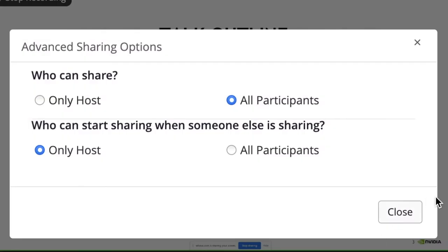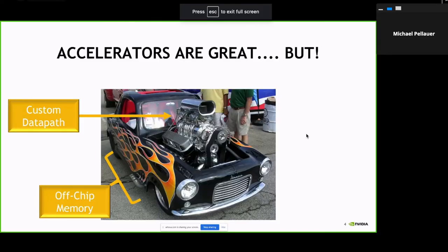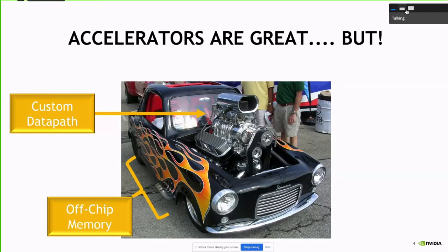I'm going to start by breaking everything Tashar talked about at a very high level down to the nitty-gritty details so we can really dive in. As Tashar mentioned, accelerators are really great in terms of making a very efficient custom data path without the sort of control overheads of a general Turing-complete processor. But the off-chip memory wall remains, and they don't do anything to solve that problem.